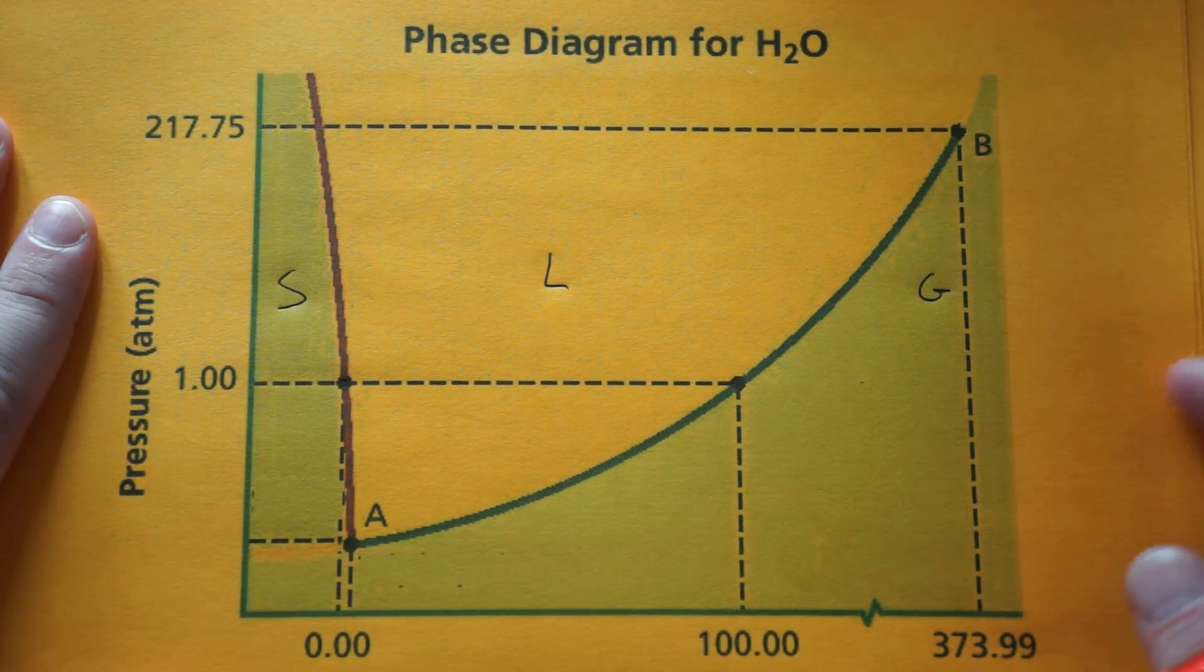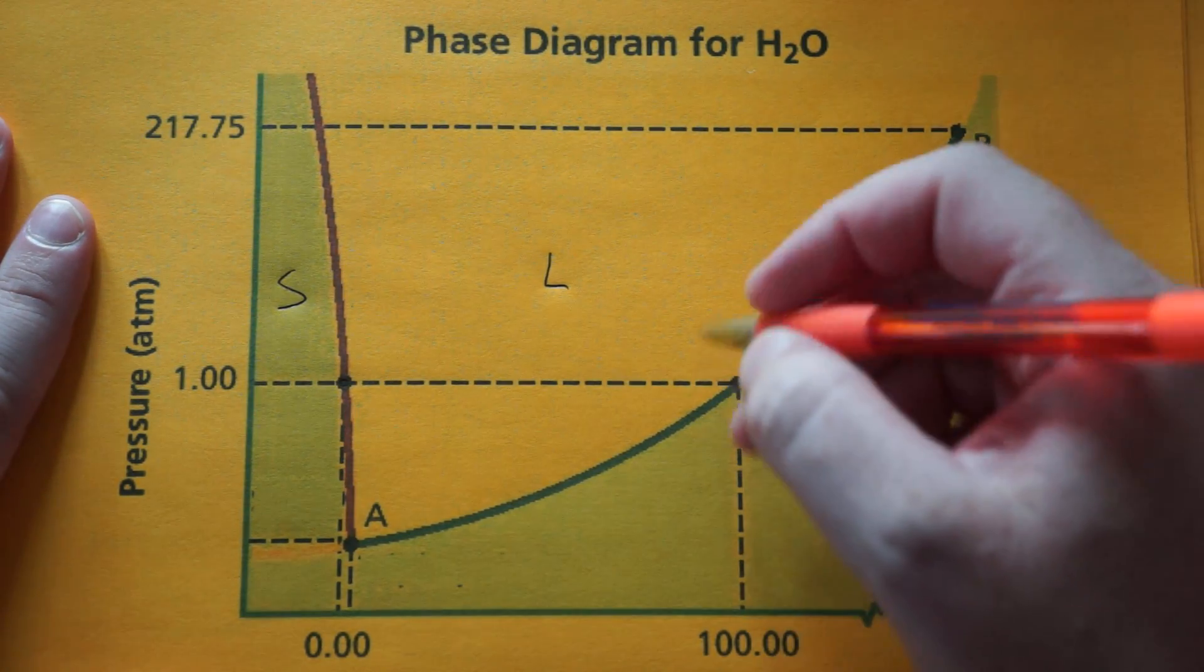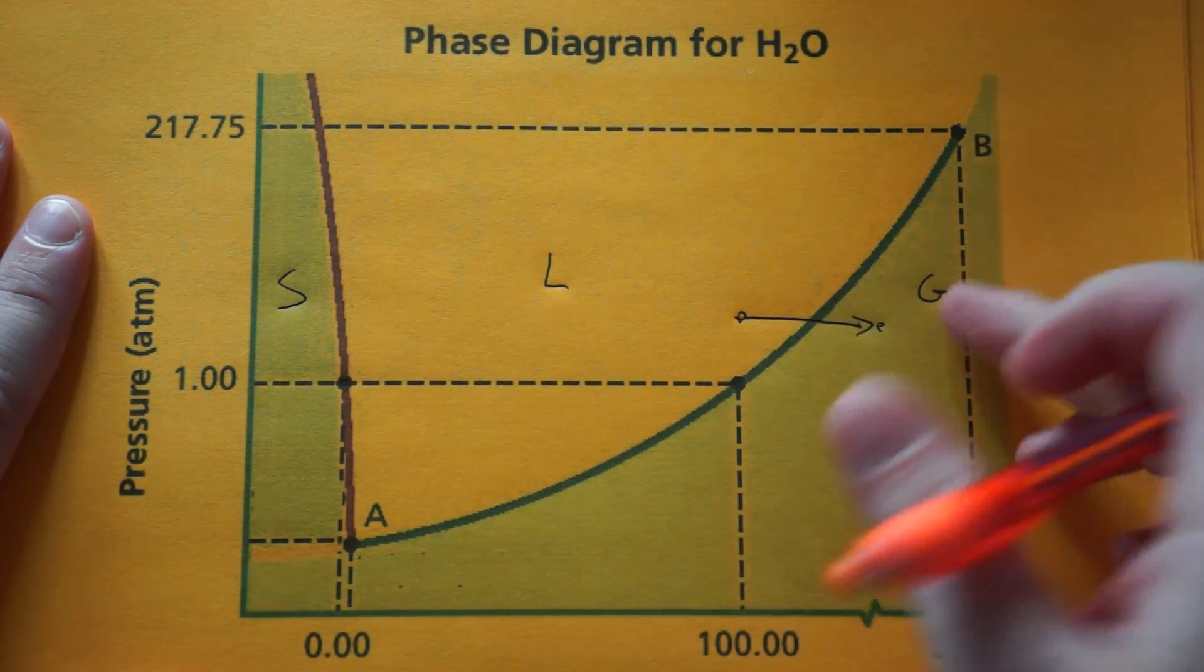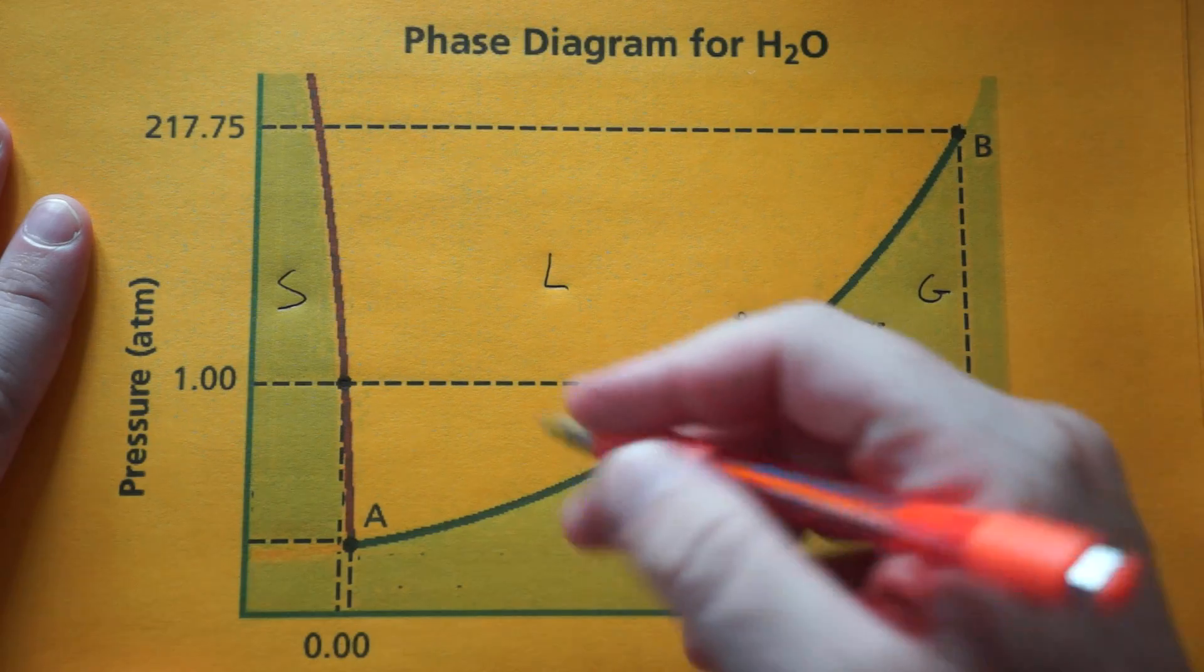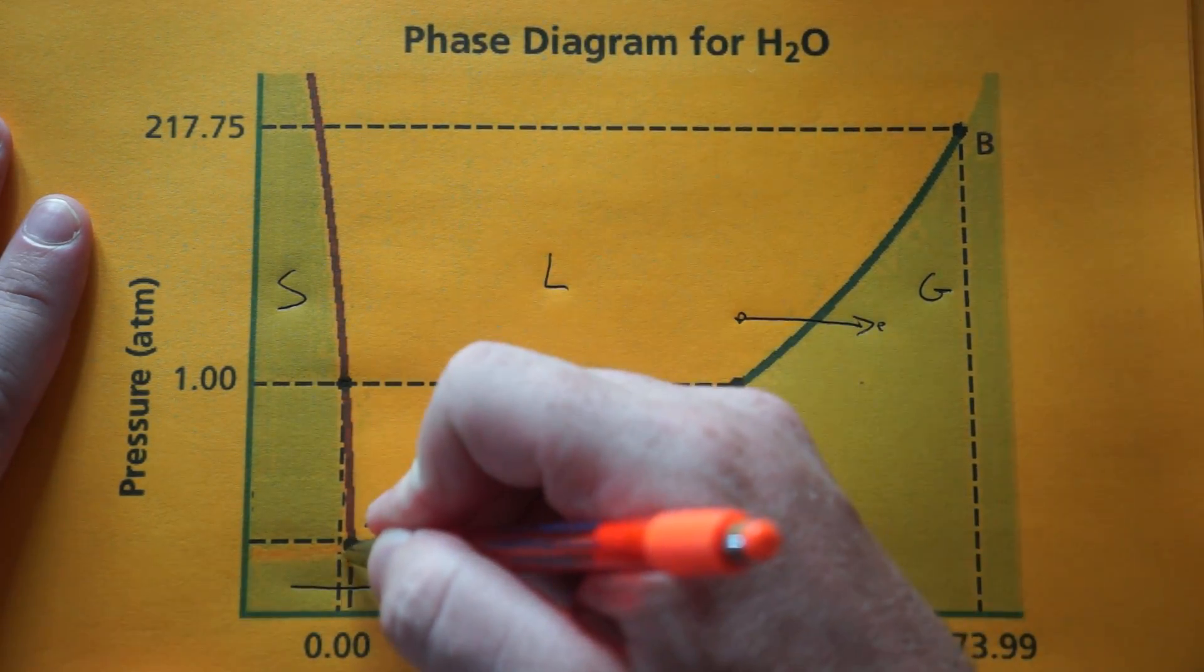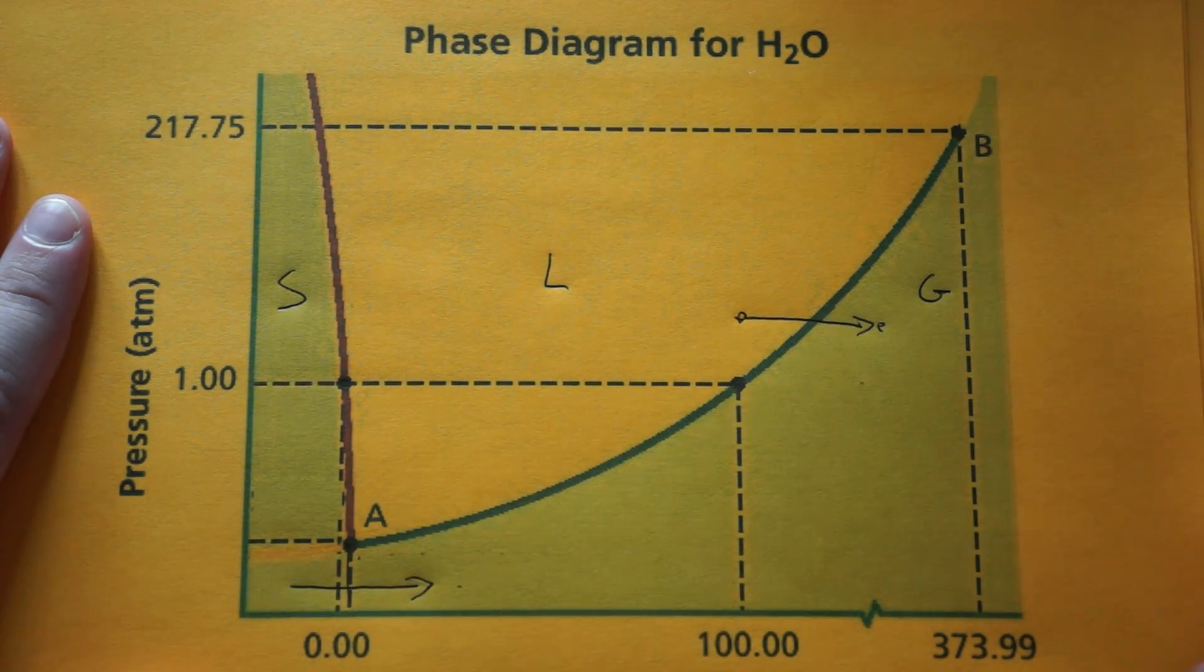You'll be asked about phase changes. They'll give you two points. Let's say a change in pressure going from here to here. What's the phase change? Liquid to gas is boiling. Or they could ask you something like this, going from solid to gas, which is sublimation.